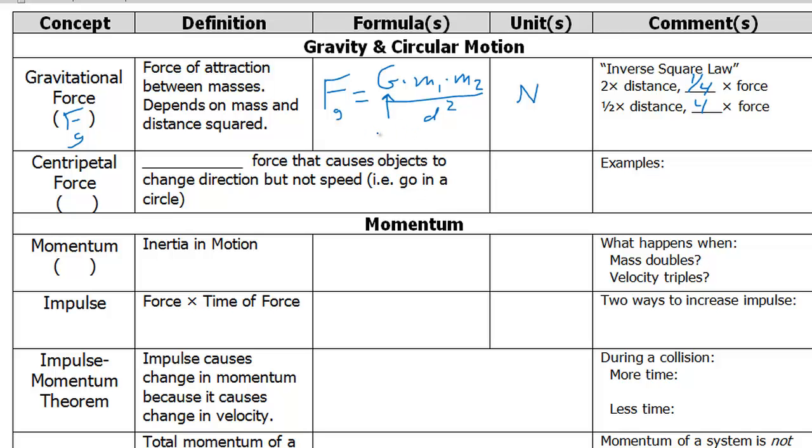but it is 6.67 times 10 to the negative 11. It's a very small number, and it represents that gravity is a very weak force. The only time we even feel it is when we're around very large objects like planets.